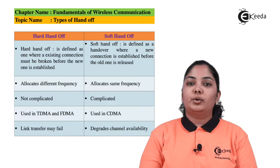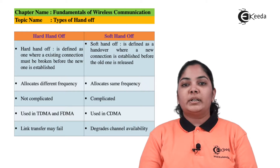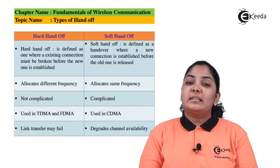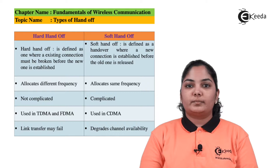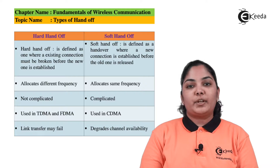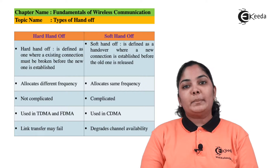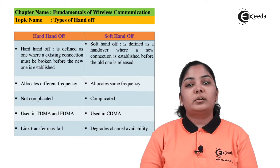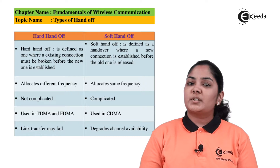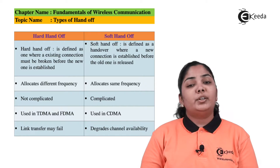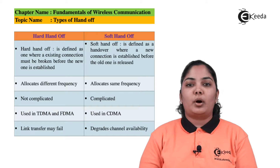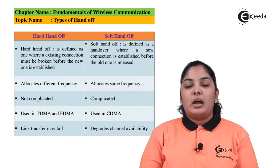Hard handoff allocates different frequency channels when a new connection is made, whereas in soft handoff the same frequency is used while making a new connection. Hard handoff is not complicated because we first break the connection and then make a fresh connection, whereas soft handoff is a bit more complicated.